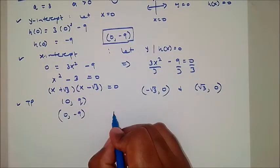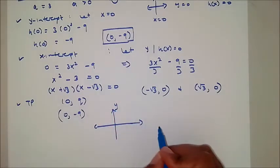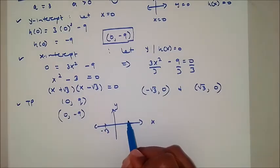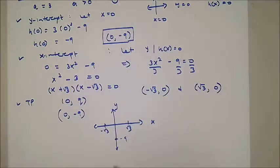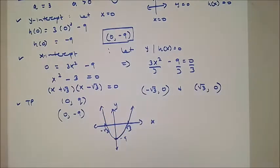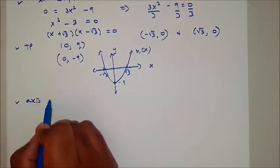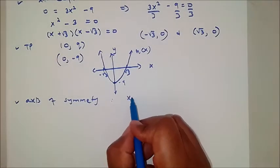Now to sketch the graph, we draw the y-axis and x-axis. We mark negative root of 3 and root of 3 on the x-axis, and the function turns at -9. We join the points to form the parabola. The axis of symmetry of the function H of x is x equals 0.